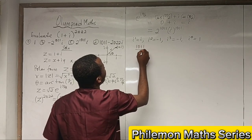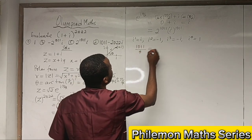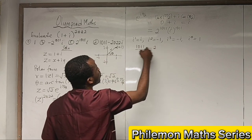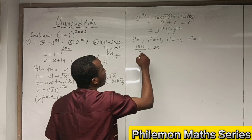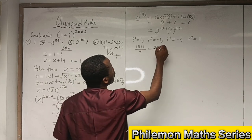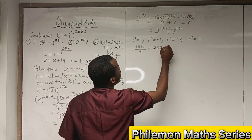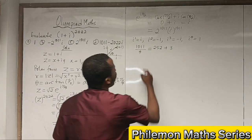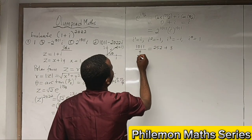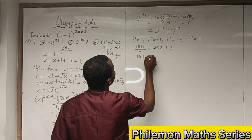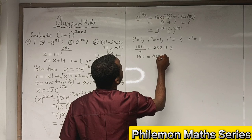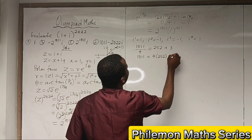1011 divided by 4: 4 into 10 is 2 remainder 2, into 21 is 5 remainder 1, into 11 is 2 remainder 3. So it means 1011 = 4 * 252 + 3.